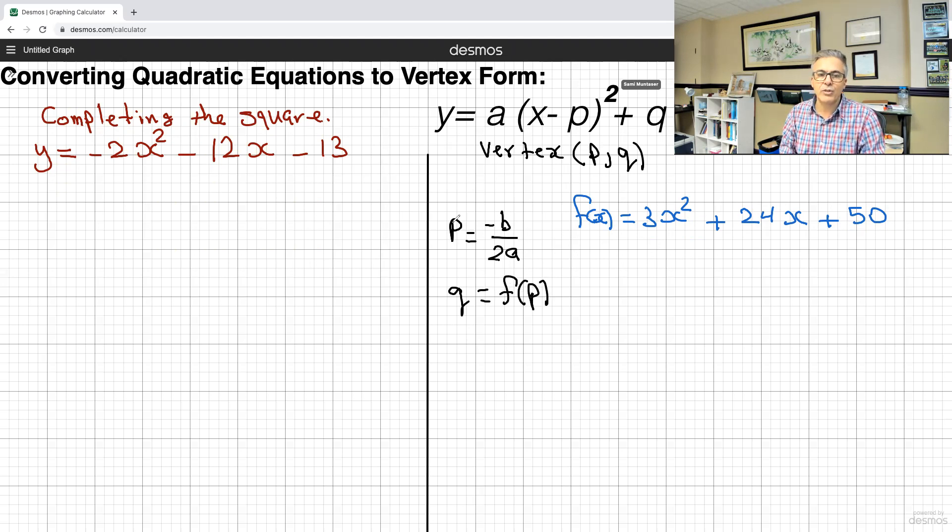What does that mean? It means once you find p, then you do f of p. What's f of p? f of p means you take the value that you found for p, sub it in for the x's here, and solve your equation. And whatever that is, that's your q. Now, maybe I'll write the equation in standard form for you, so you know where this b and a and all of that come from. So the equation is y equals ax squared plus bx plus c. So that's the equation. So a here would be 3, b will be 24, c will be 50.